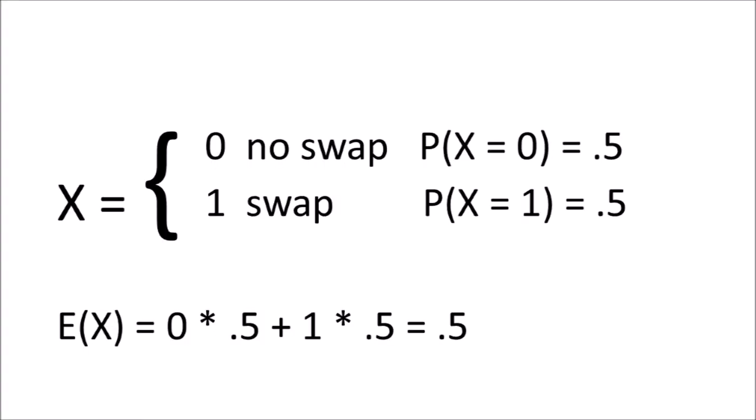Now let's consider the average case. We would expect half of the inner loop iterations to have a swap. Let's demonstrate this with a random variable where x is the number of swaps in an inner loop. One represents a swap, zero represents no swap taking place. The probability of these values for x are 0.5 for both, which means our expected value is 0.5.